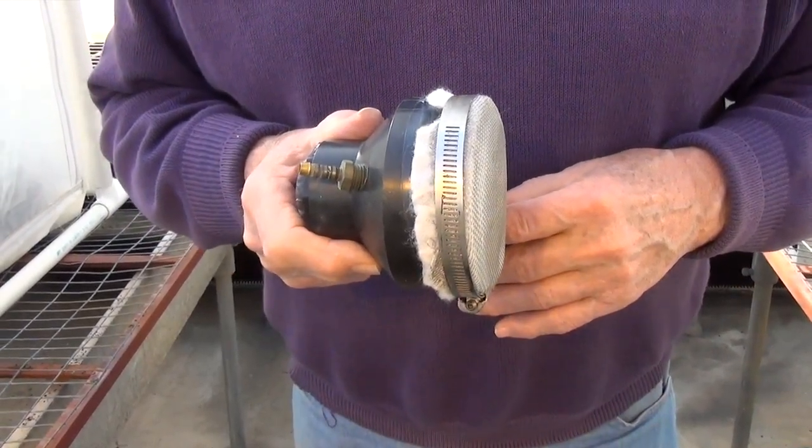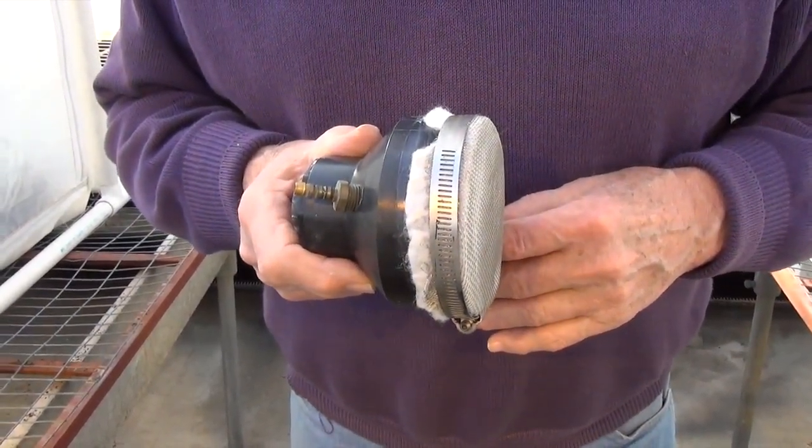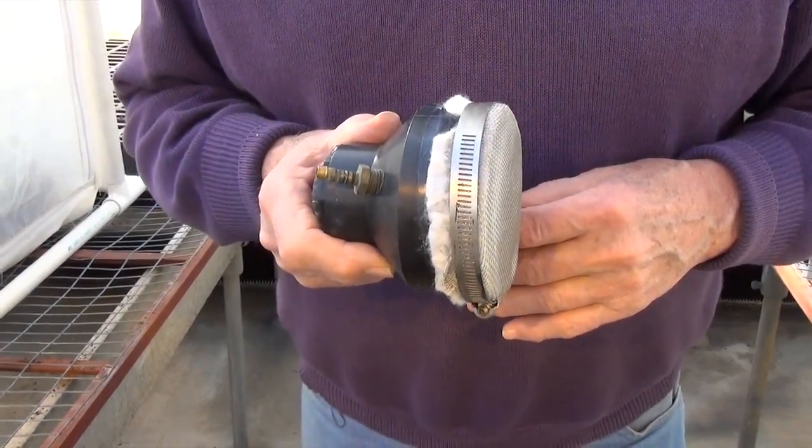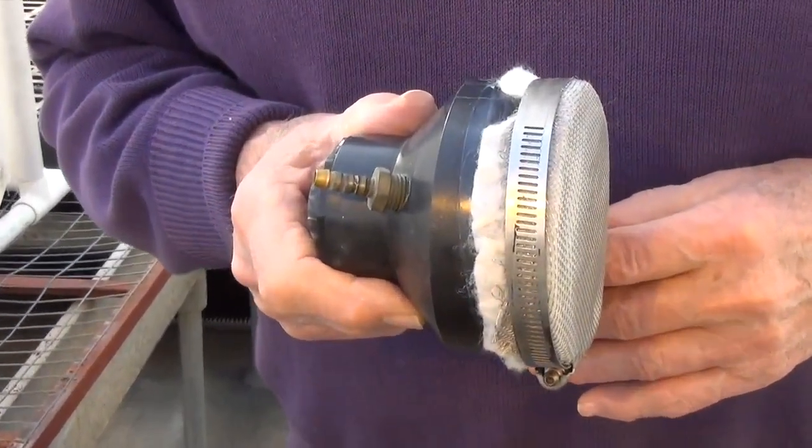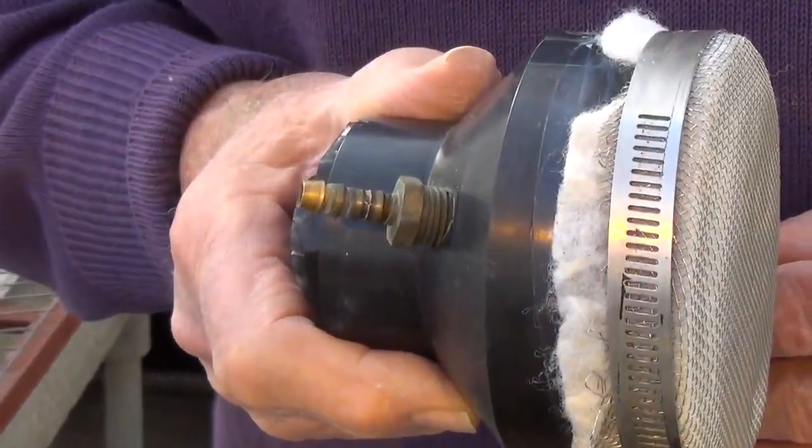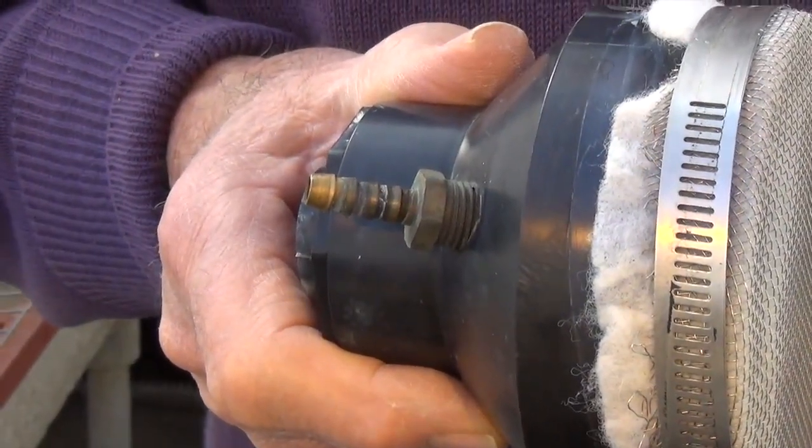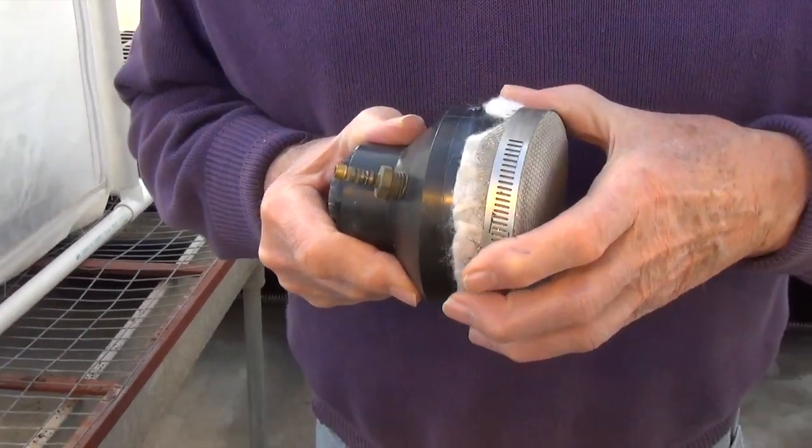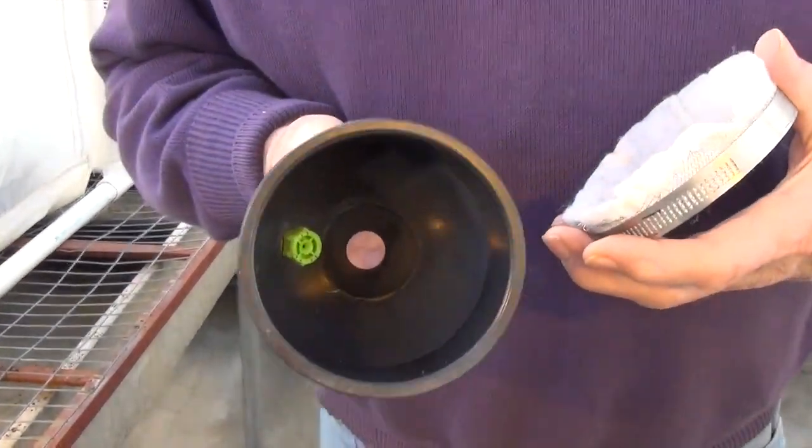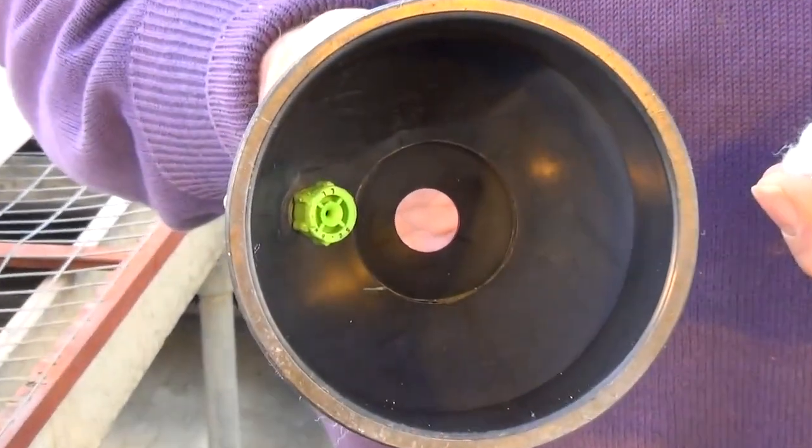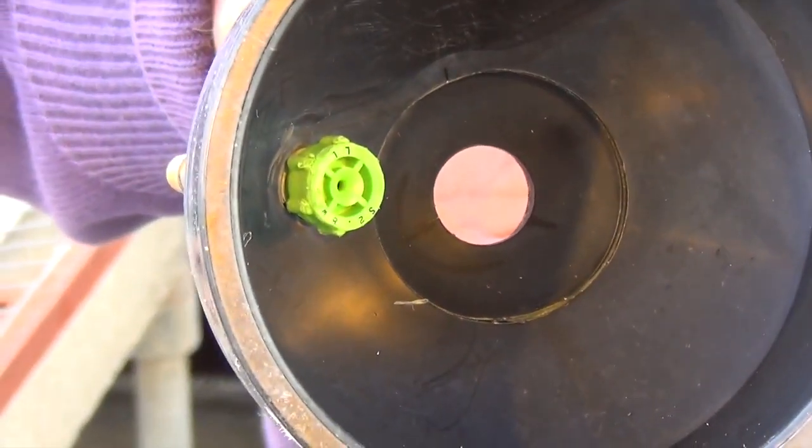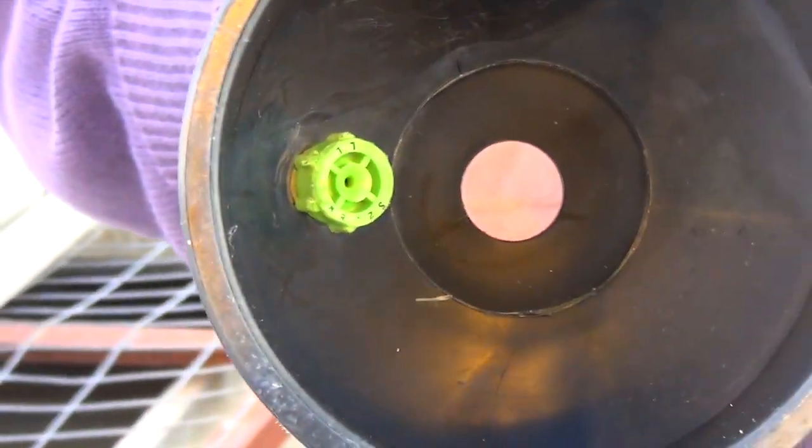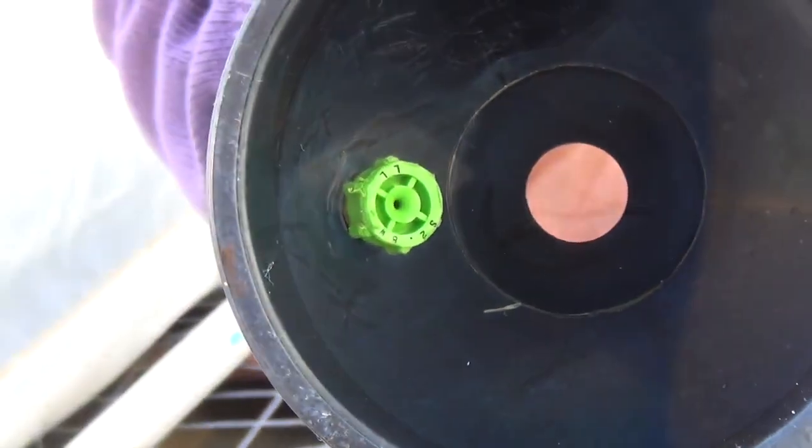The jet pump forces the soap solution into a nozzle, which is located on the inside of the foam generator.